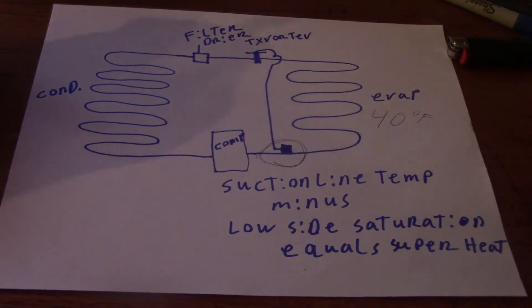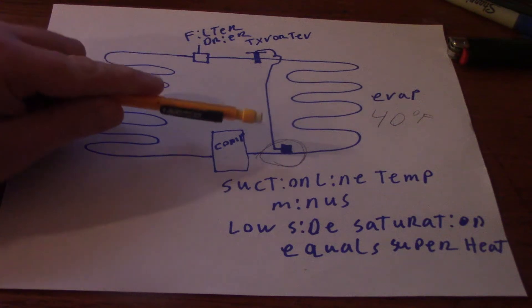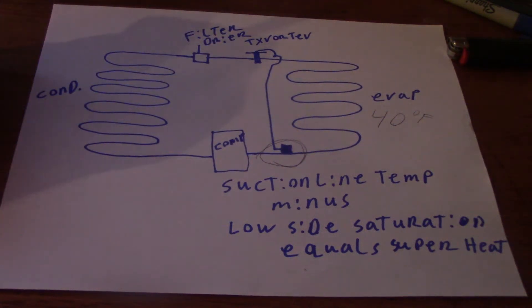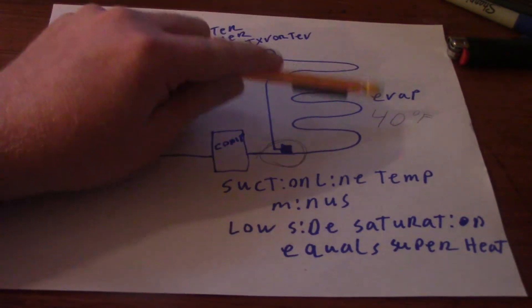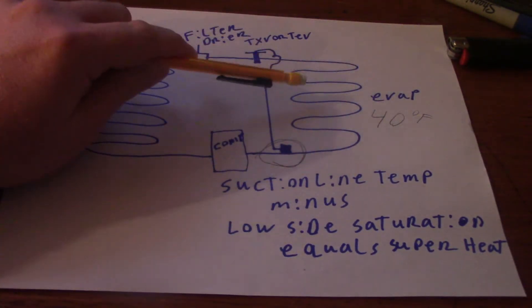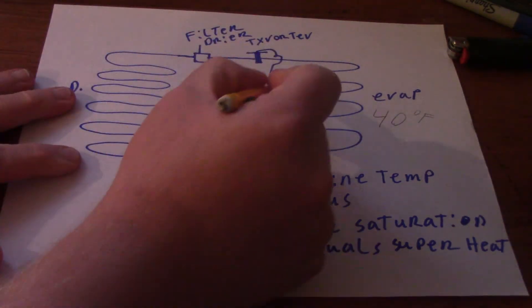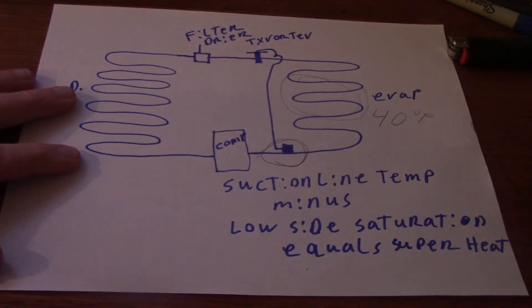If it was like R134A with about 15 PSI, you're talking roughly 15, 16 degrees saturation temperature. What that saturation is, the temperature of the refrigerant right there in the evaporator, that's the temperature that's boiling off. You have your liquid and vapor mixture there.